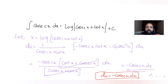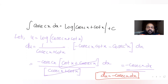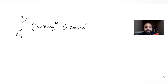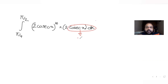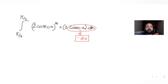So now we know that du = -cosec x dx. We have 17 powers of cosec x, so if I separate one cosec x, I can write the integral from π/4 to π/2 as (2 cosec x)^16 times cosec x dx. I can write cosec x dx as -du.